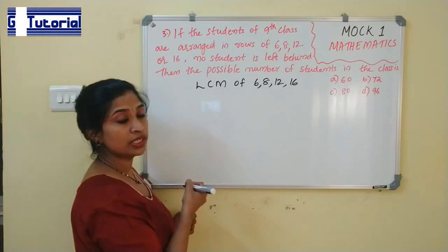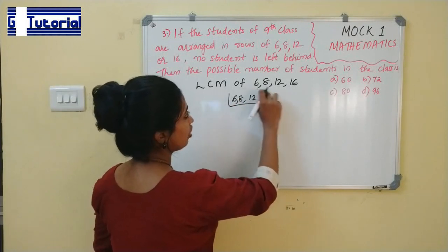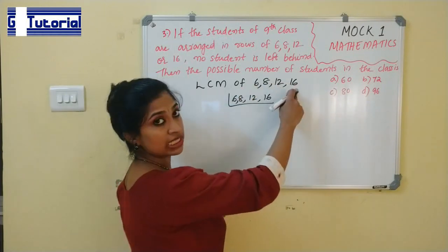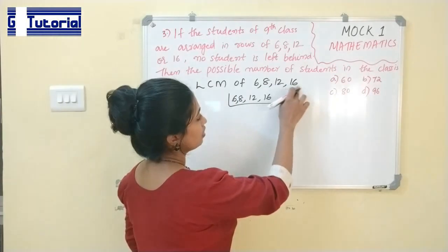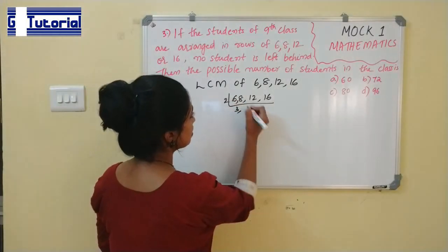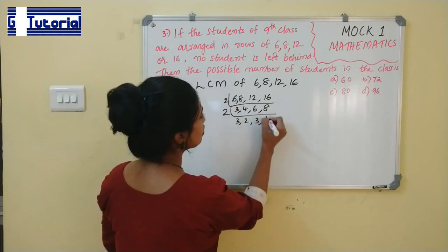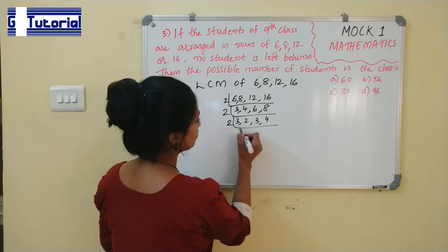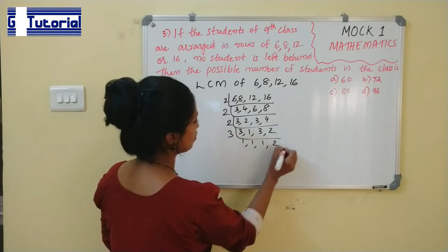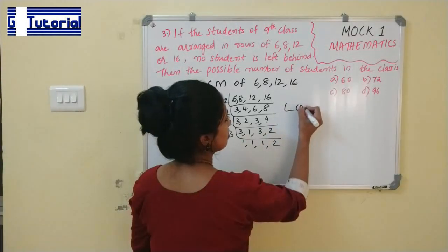What is the LCM of 6, 8, 12, and 16? If the highest number (16) is not divisible by all others — 16 is not divisible by 6 — so 16 is not the LCM. Computing by prime factorization: LCM = 2⁴ × 3 = 16 × 3 = 48.